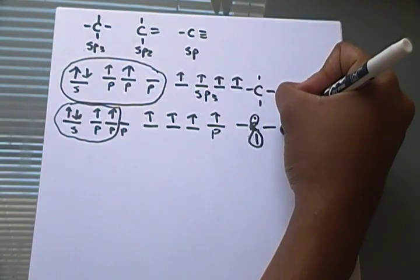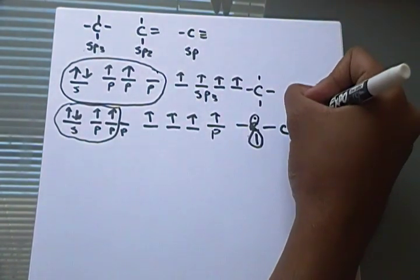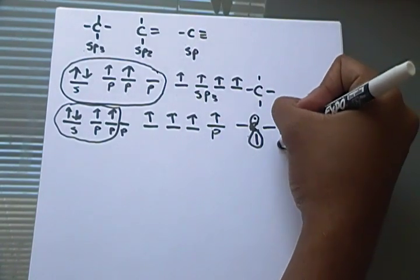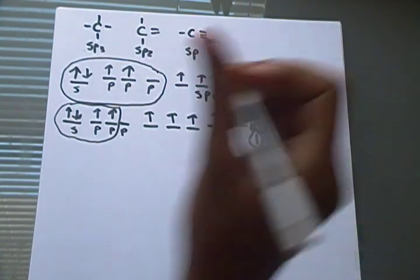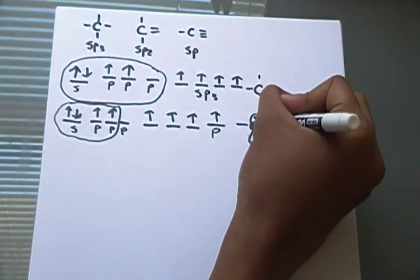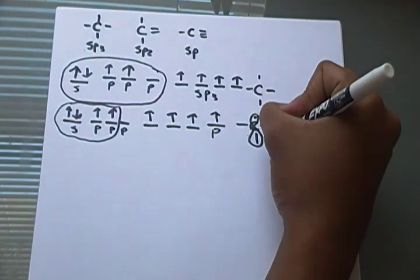When it comes together with another SP2 hybridized carbon, that carbon would also have its P orbital. And it'll have that one electron in there. And this is how they bond. Like that. And that's the basis of that double bond.